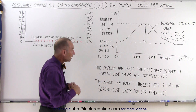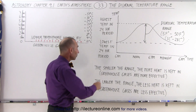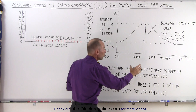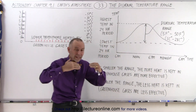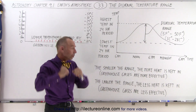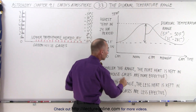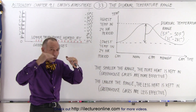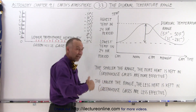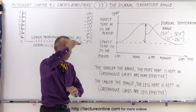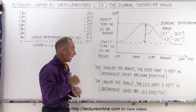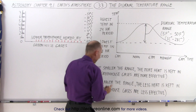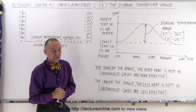What we need to realize is that the smaller the diurnal temperature range, the more heat is being kept in, because then the heat leaks out much more slowly, which means that the greenhouse gases are therefore much more effective. But if the temperature drops rather quickly, the larger the range — and as the temperature drops more quickly you're going to have a much bigger range between daytime and nighttime temperatures — that means that less heat is being kept in, and the greenhouse gases are therefore less effective.